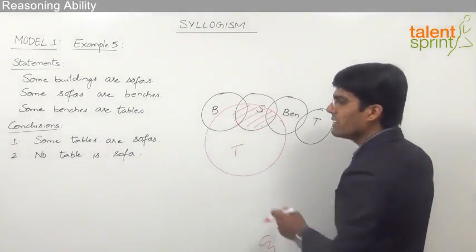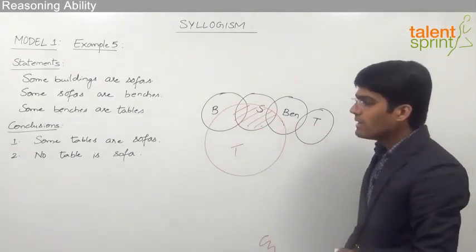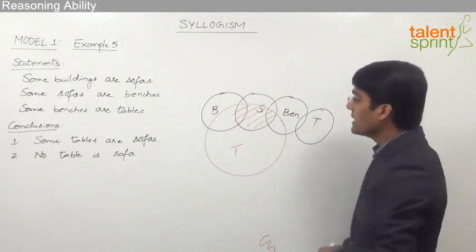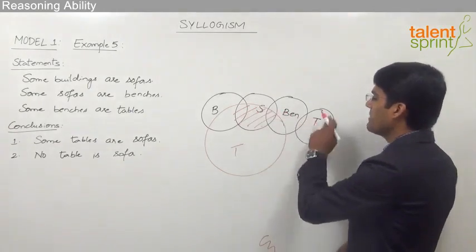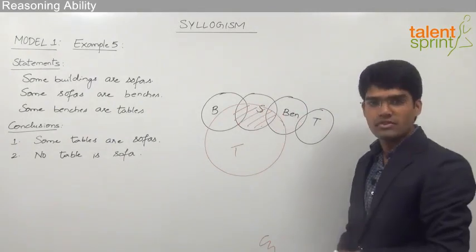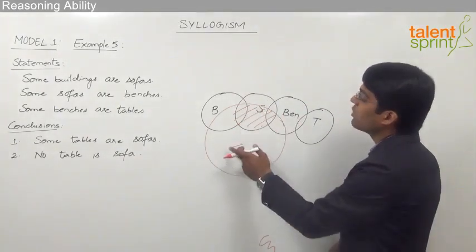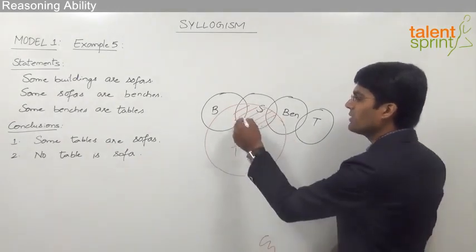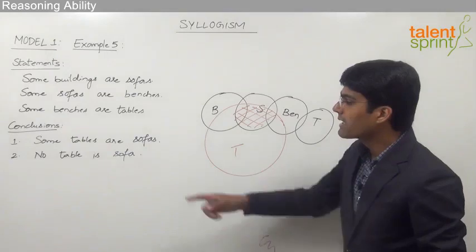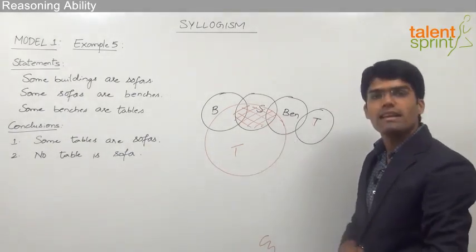Conclusion one is true in the second diagram but not in the basic diagram. Looking at conclusion two — 'no table is sofas' — it follows the basic diagram because tables and sofas are completely disjoint with no overlapping. However, in the second diagram, 'no table is sofas' fails because some of the tables are sofas. So conclusion two follows the basic diagram but not the second diagram.